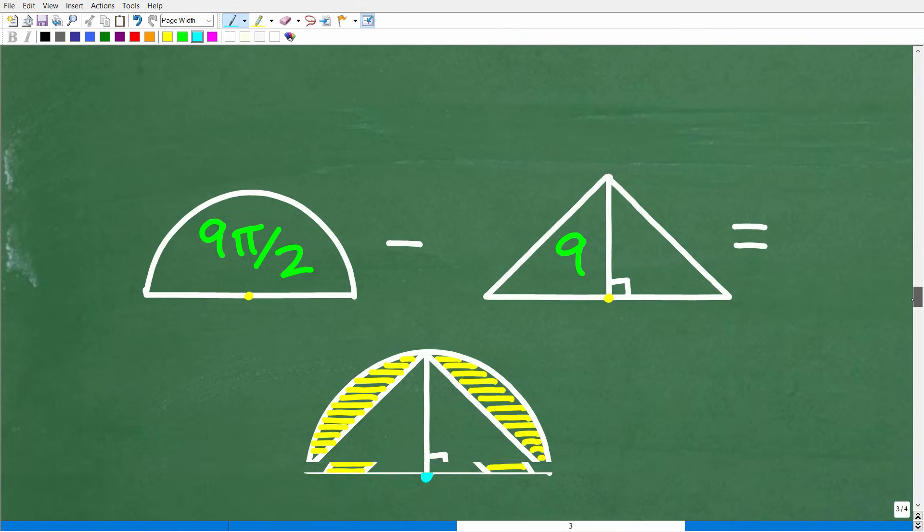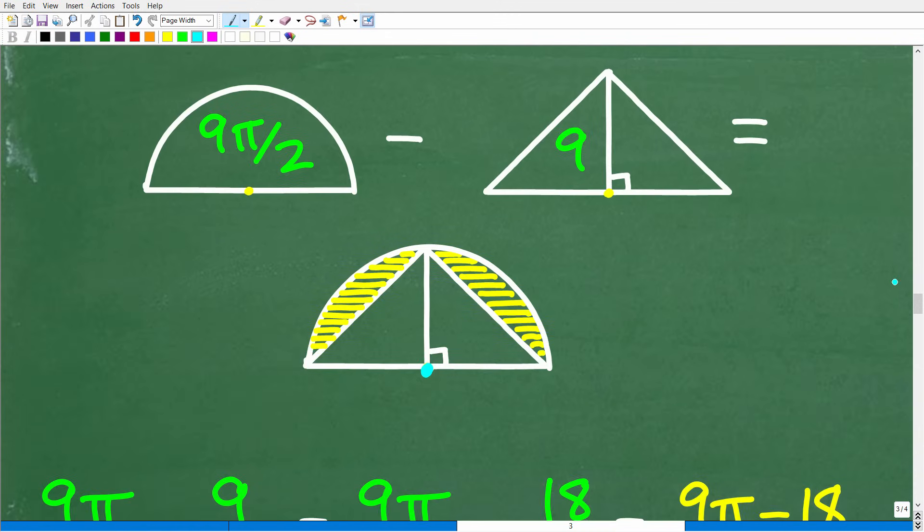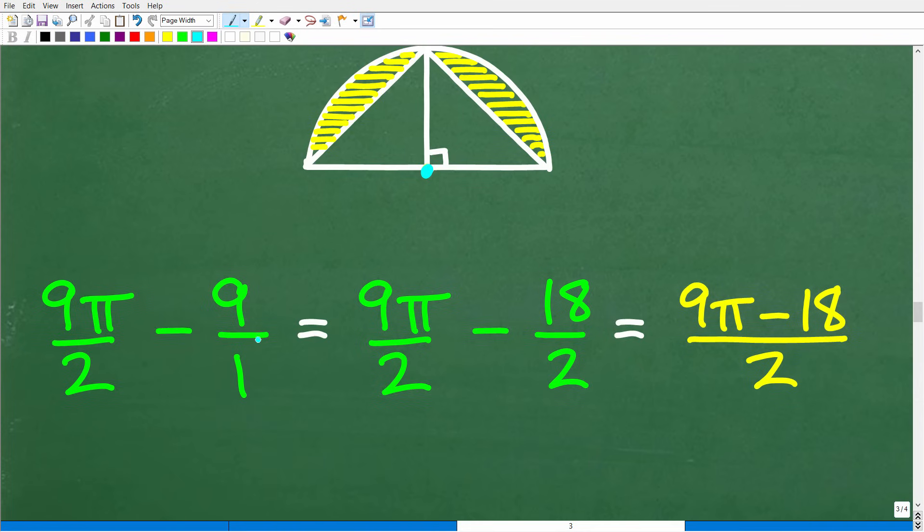We have to subtract away the triangle from the semicircle. That will give us these little sections. We have 9 pi over 2, the area of the semicircle, minus 9, the area of the triangle. Let's do that math. 9 pi over 2 minus 9, the area of the triangle, we'll express that as 9 over 1. We need to find the LCD. Here's 2, here's 1, so we change this to 2 and multiply that 1 by 2, which means we multiply this 9 by 2. So we have 9 pi over 2 minus 18 over 2. We can subtract the numerators: 9 pi minus 18 over 2.